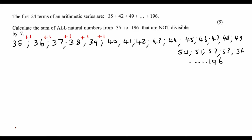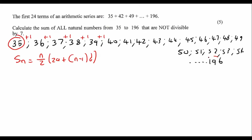We can use this formula. The problem is we don't know how many terms there are. We're going from 35 up to 196, so you could say 196 minus 35, but remember to add one. So there will be 162 terms — if you had to count all the way from 35 up to 196, there would be 162 terms.